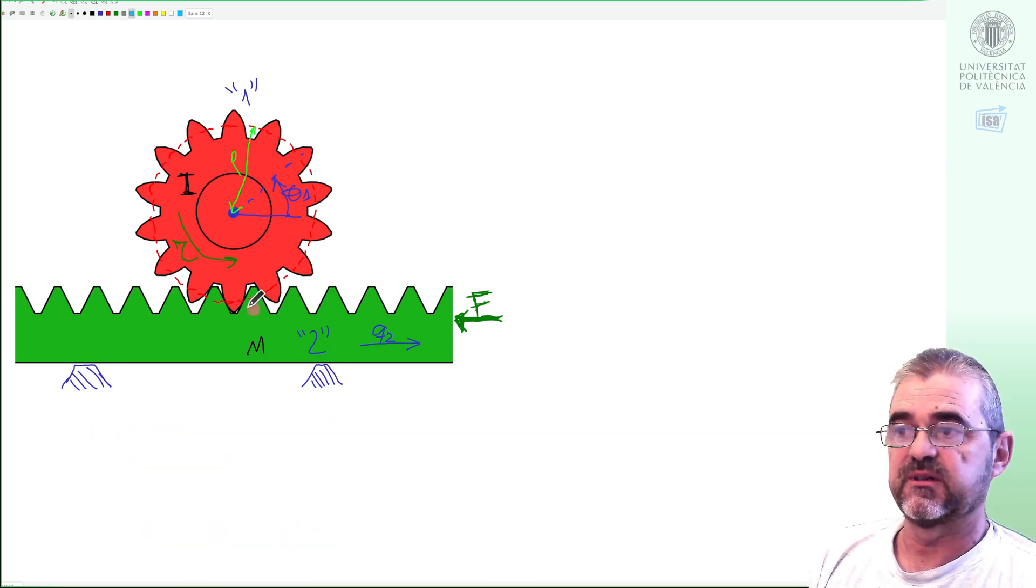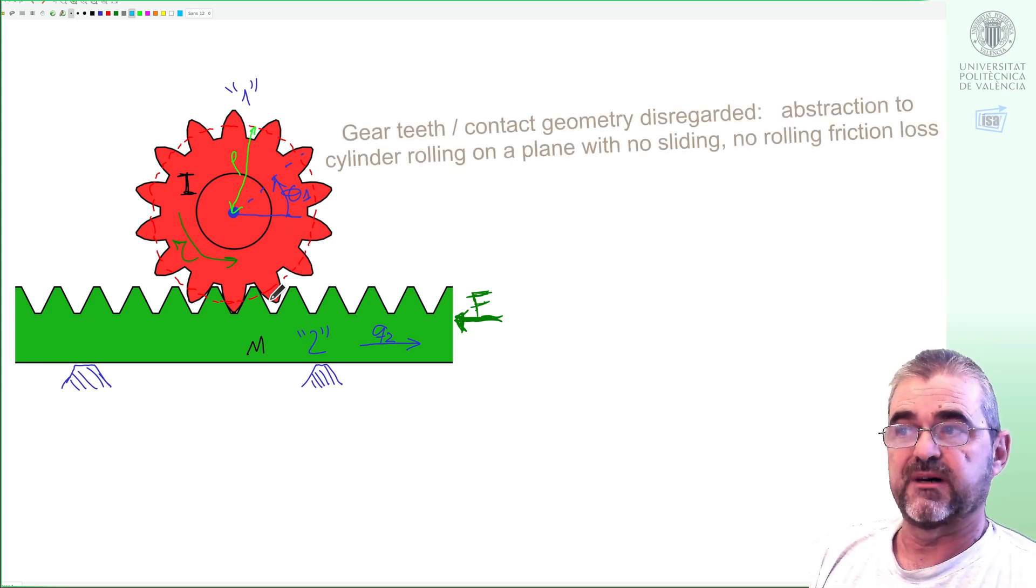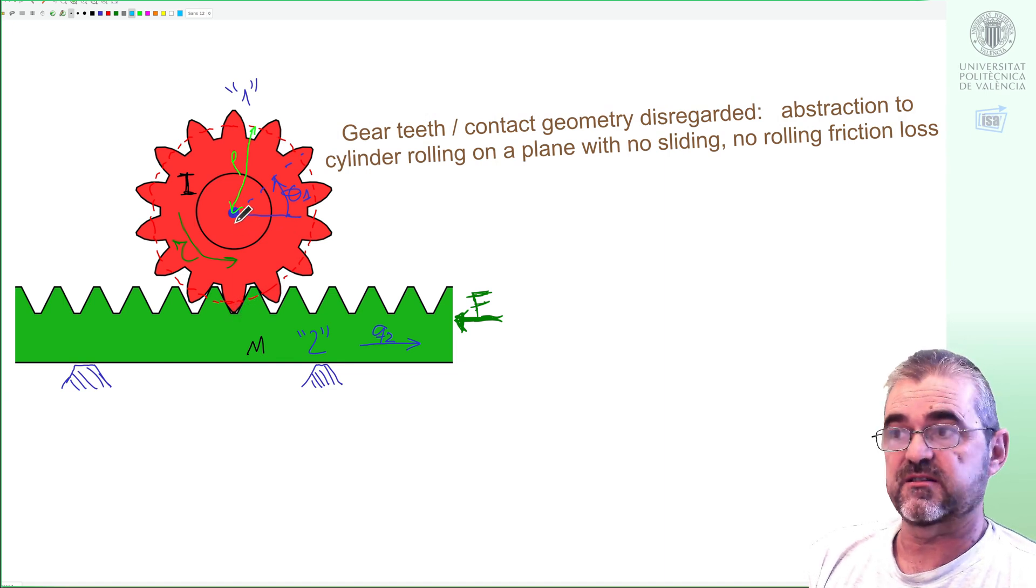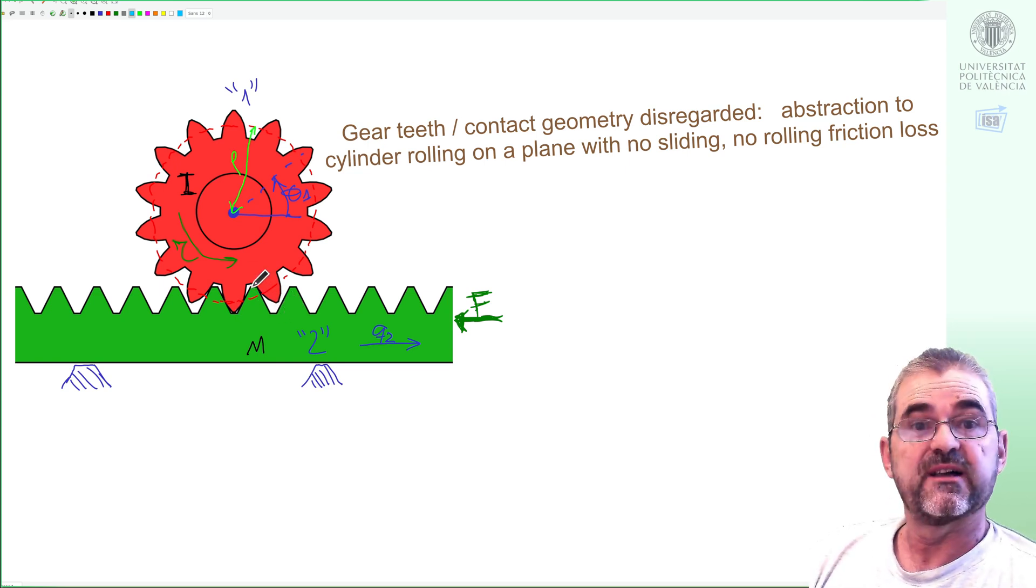Also the shape of the teeth is this way because contact may happen at different places as this pinion rotates but we will disregard those nuances in our model and we will just consider that contact takes place at a fixed distance rho from the center of rotation, so we will assume that this is sort of a cylinder touching a plane.